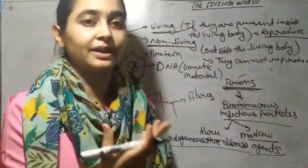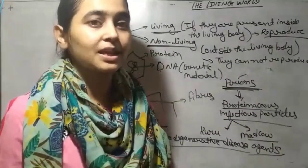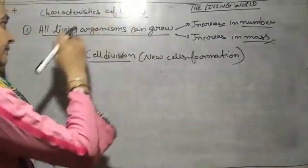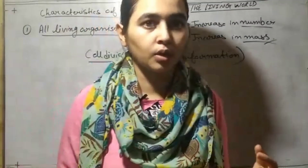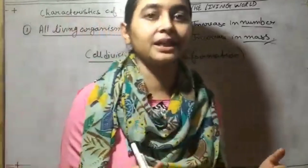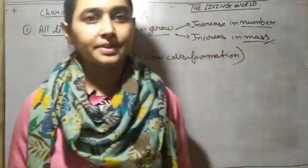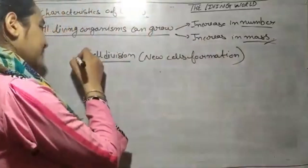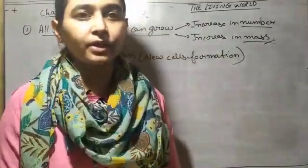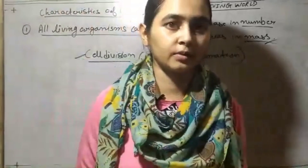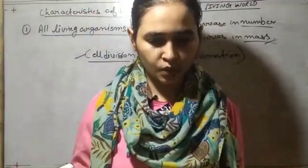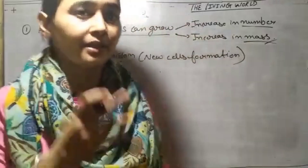Now we will learn different characteristics of living organisms. First: all living organisms can grow. Growth has two properties — they can increase in number and increase in mass. For living organisms, increasing in number comes from cell division, meaning the body divides and new cells are formed.